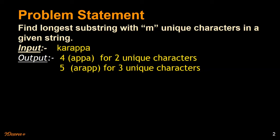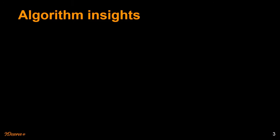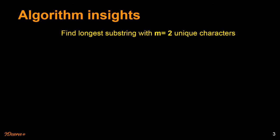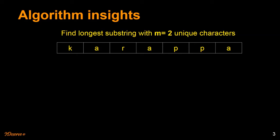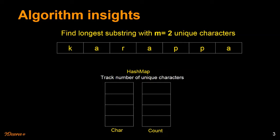Now let's go ahead to the algorithm insights. Let's consider this problem where we want to find the longest substring with M equal to two unique characters and the given string is 'karappa'. The string is split into different characters: k, a, r, a, p, p, a — this is the character array. We are going to maintain a hash map where we track the number of unique characters as we go along the input string. The hash map will contain the character and the corresponding count in the substring we are looking at.